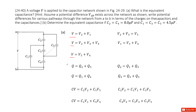Another thing to consider is charge. The charge from point A is Q. It goes through different branches, so Q equals Q2 plus Q5. Then from that node it splits two ways, so Q2 equals Q1 plus Q3. At the next node, Q3 and Q5 come together to form Q4. And then Q1 and Q4 come together and return to point B, which is also Q.